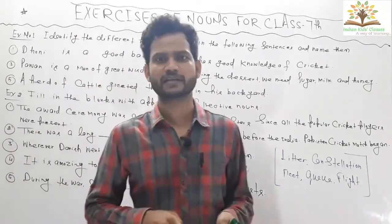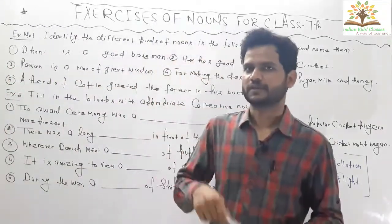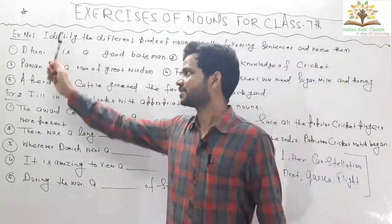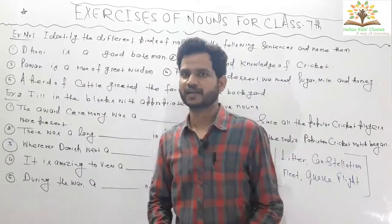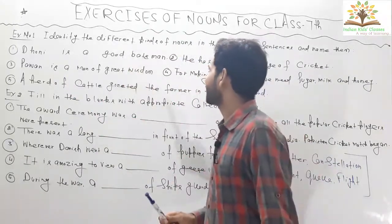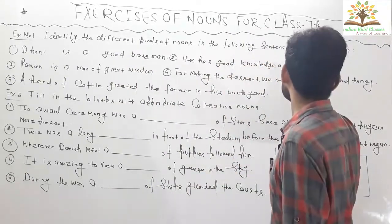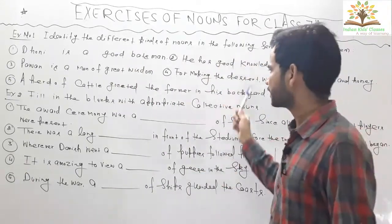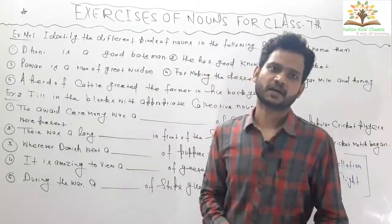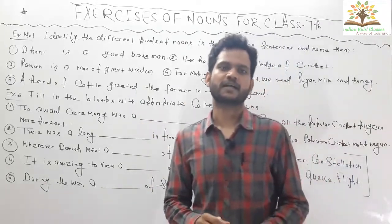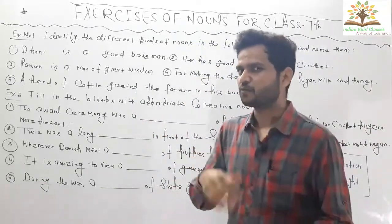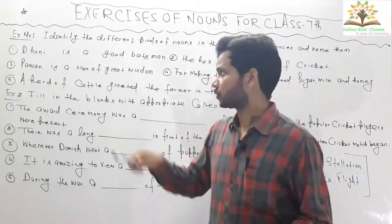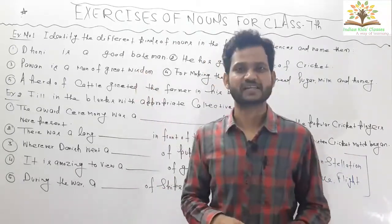I hope you have solved it. Now I am going to explain you one by one. Exercise number one is: identify the different kinds of nouns in the following sentences and name them. So here you need to find out the nouns and also say what kind of noun they are. This is your first basic question.